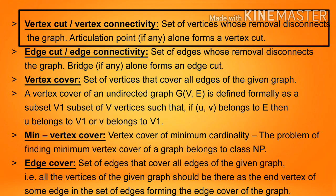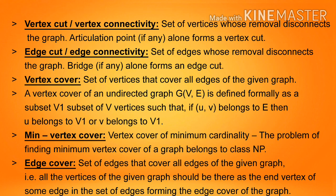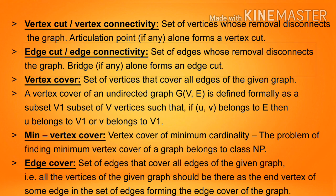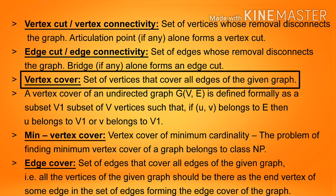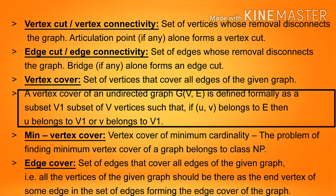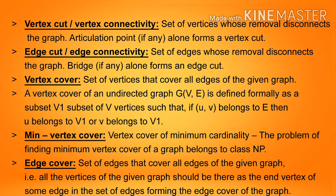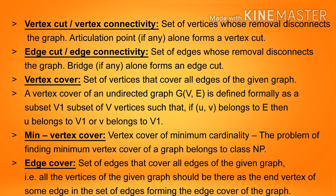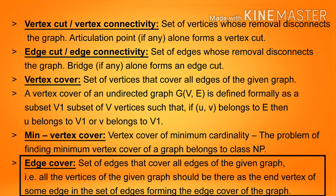Vertex cut or vertex connectivity: the set of vertices whose removal disconnects the graph; an articulation point alone forms a vertex cut. Edge cut or edge connectivity: the set of edges whose removal disconnects the graph; a bridge alone forms an edge cut. Vertex cover: the set of vertices that cover all edges of the given graph. Formally, a vertex cover of an undirected graph G=(V,E) is a subset V' of V such that if edge (u,v) belongs to E, then u belongs to V' or v belongs to V'. Edge cover: the set of edges such that all vertices of the given graph appear as an end vertex of some edge in the set.